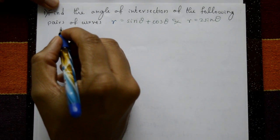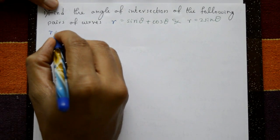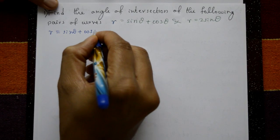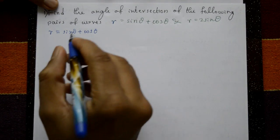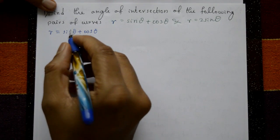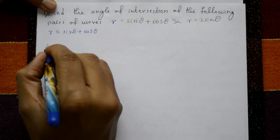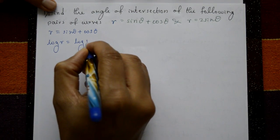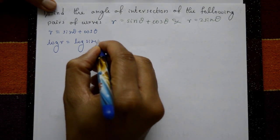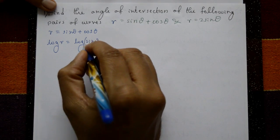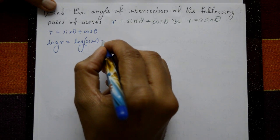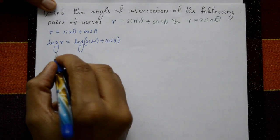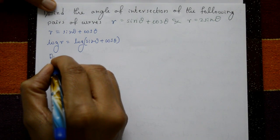For the first curve r = sinθ + cosθ, take log on both sides: log r = log(sinθ + cosθ). Now differentiate with respect to θ.